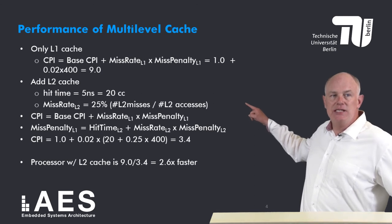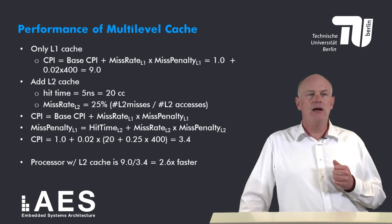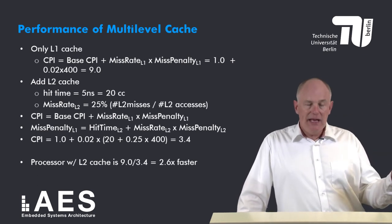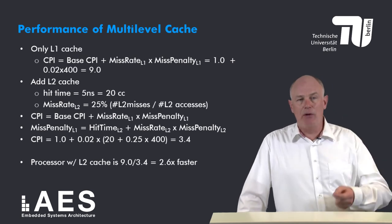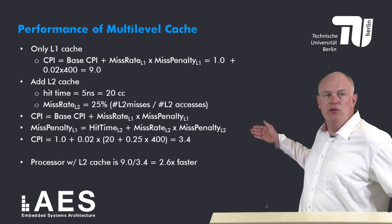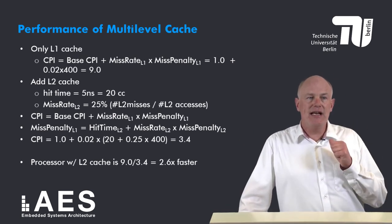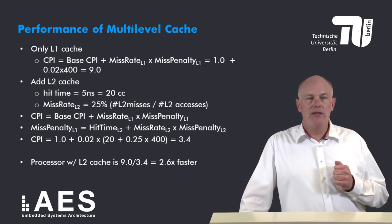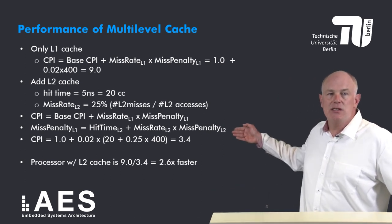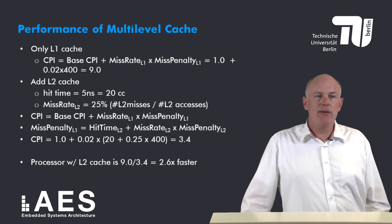Summarizing: with only an L1 cache the CPI is 9.0. Adding an L2 cache, the CPI is given by the base CPI plus the miss rate of L1 times the miss penalty of L1, where the miss penalty of L1 is now the hit time of L2 plus the miss rate of L2 times the miss penalty of L2. Substituting: 1.0 plus 2% times (20 plus 25% times 400) gives an average CPI of 3.4. The processor with an L2 cache is faster by a factor of 2.6.